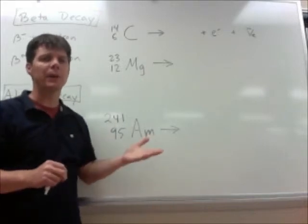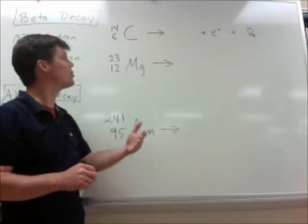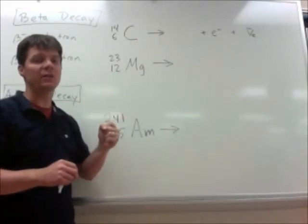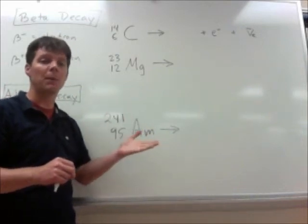So by looking at the periodic table, we can see that the neighboring element to carbon is nitrogen. As this emission process occurs, one of the neutrons actually becomes a proton.